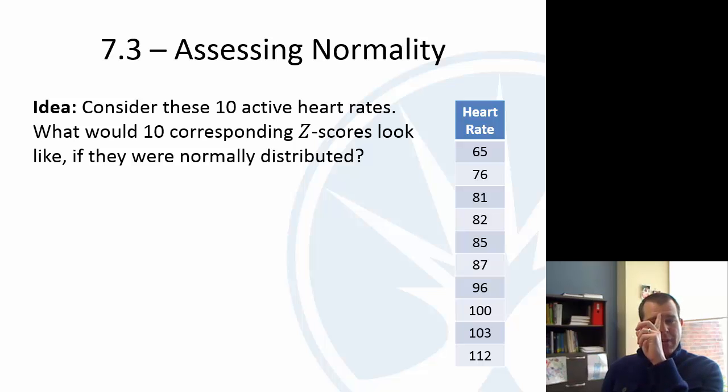Here's what I have. I have some data here. This was actually from another class. We did resting heart rates, then we walked around and took our heart rates again, and these were some active heart rates. I don't know if heart rates are normally distributed. I kind of suspect they are, but I'm not sure. So the question is, could these come from a normally distributed population?